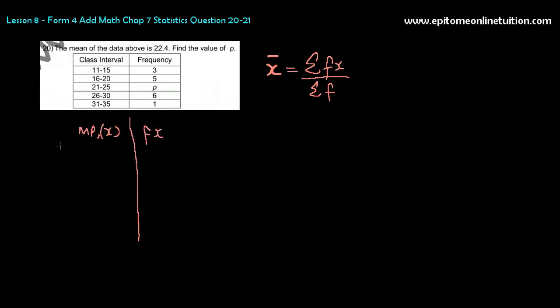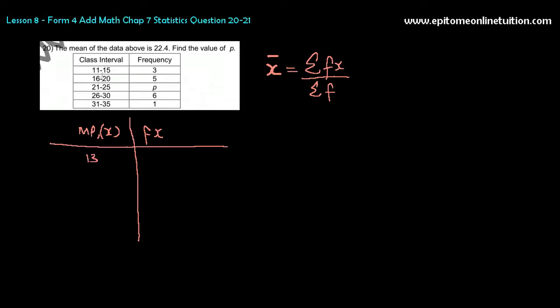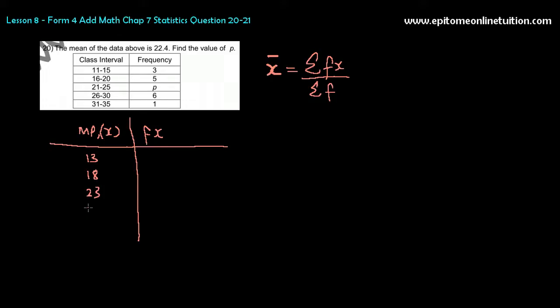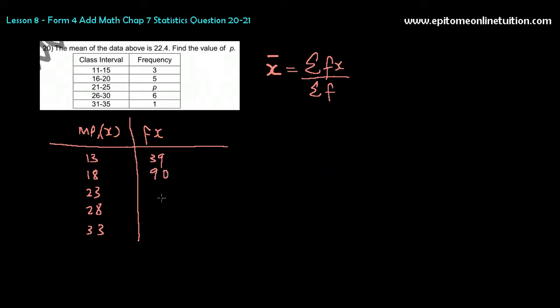The midpoint would be 13 for the first class, and that is 18, followed by 23, 28, and 33. And the frequency is 3, so fx would be 13 times 3, right? So that's 39.